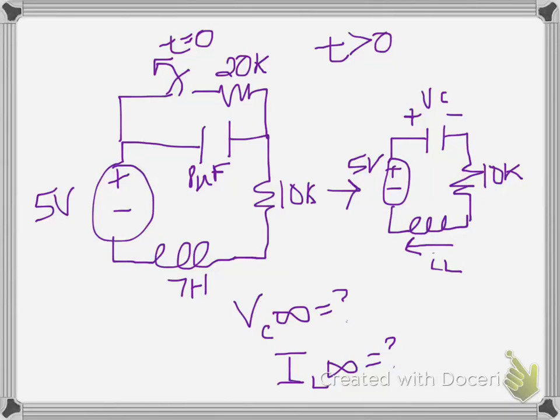We have this circuit that has both an R, an L, and a C, with a switch that is going to open at time zero. So after time zero, looking for time infinity well after time zero, all we have is that 5 volt source, the capacitor, the resistor, and the inductor together in this circuit.